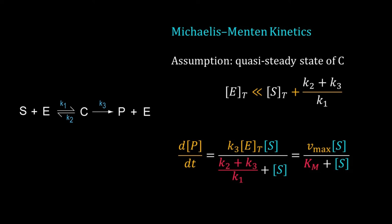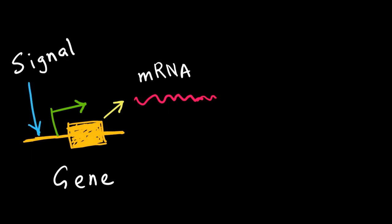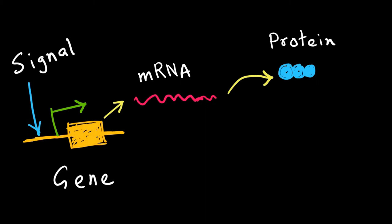That makes our modeling more realistic, but be careful — the assumption of Michaelis-Menten kinetics is not valid in many biological systems. Gene expression is a multi-step process involving a large number of different molecules. Keeping the complexities aside, we can imagine it as a three-step process: first, generation of mRNA by transcription (sometimes a signal controls this process), followed by translation, with both protein and mRNA getting degraded over time.